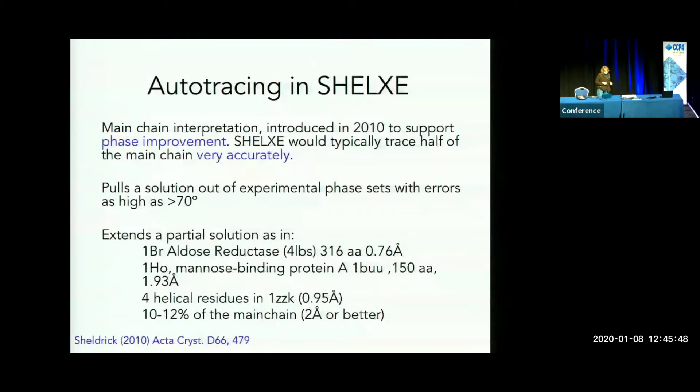In this context, autotracing was introduced in Shell XE in 2010 with the aim of improving phases that were as bad as 60 degrees from the solution — to pull a solution from such phases. Over time this has evolved, and now phases as bad as 70 or 75 degrees are being pulled. You can extend a partial solution depending on the data you have and the starting phases.